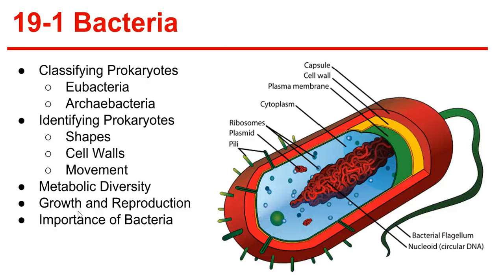Spore formation. When the growth conditions become unfavorable for the bacteria, many bacteria will form structures called endospores. That is formed when a bacterium produces a thick internal wall that encloses its DNA and a portion of its cell. These spores can remain dormant for months before being released.